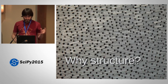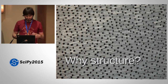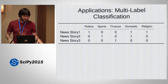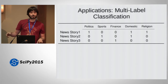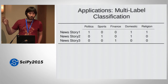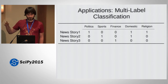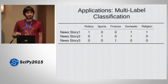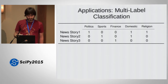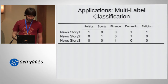So why are we interested in this? The most simple application I can think of is multi-label classification. Think about having a couple of news stories, and you want to classify in a supervised setting which topics a news story belongs to — like politics, sport, finance, domestic, religion. These are not exclusive classes, as in multi-class classification. Each news story could touch upon multiple of these topics, and you want to decide which are relevant.